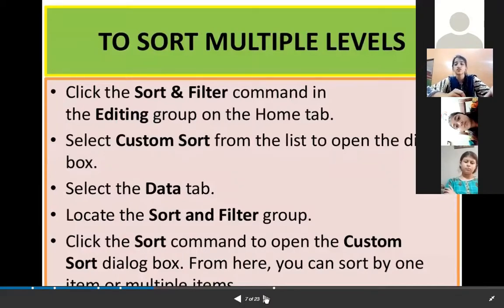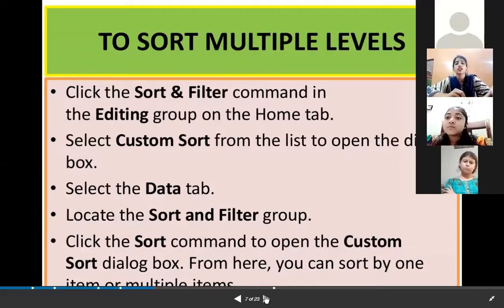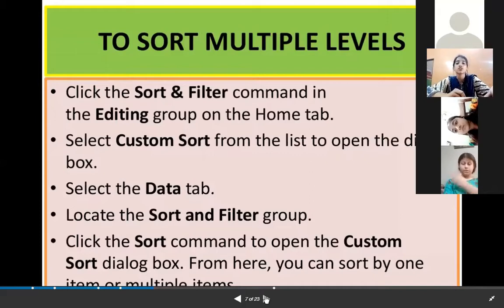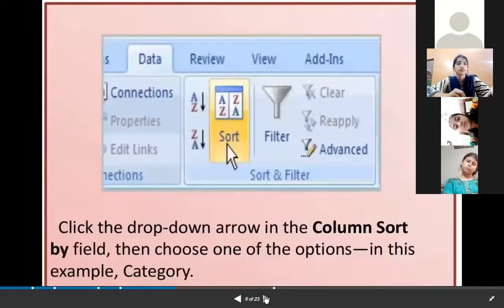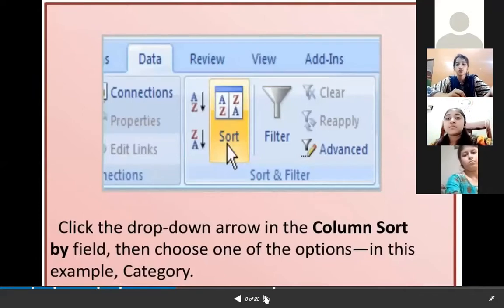Select custom sort from the list to open the dialogue box. Select the Data tab, locate the Sort and Filter group, click the Sort command to open the custom sort dialog box from where you can sort one by one item on multiple items. Click the dropdown arrow in the column Sort By field, then choose one of the options. In this example, Category.